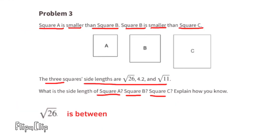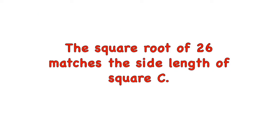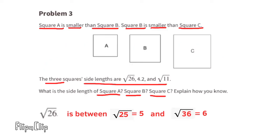The square root of 26 is between the square root of 25 and the square root of 36. The square root of 25 is 5 and the square root of 36 is 6, so the square root of 26 is between 5 and 6. Since that's larger than 4.2, we know it's the side length for Square C, the largest of the three squares.